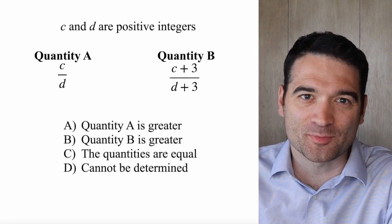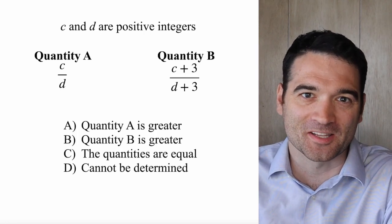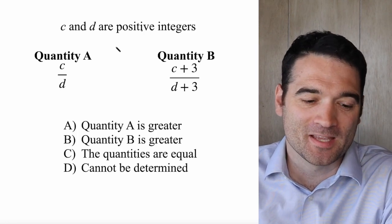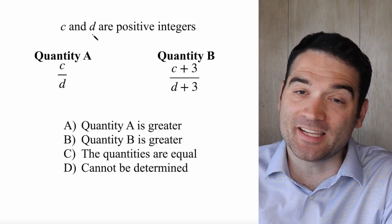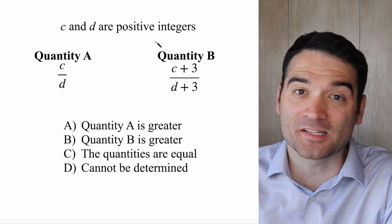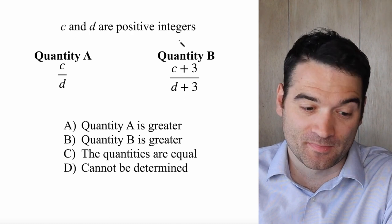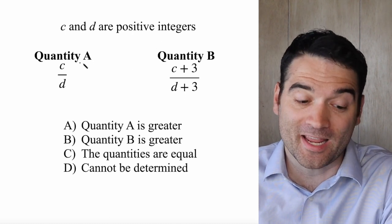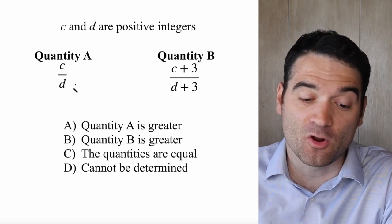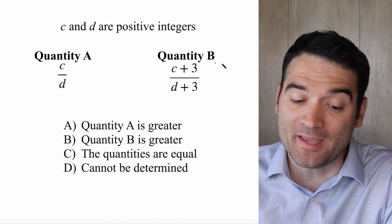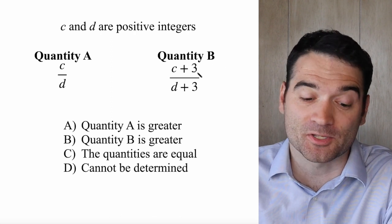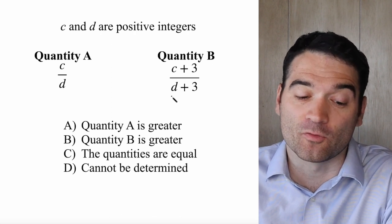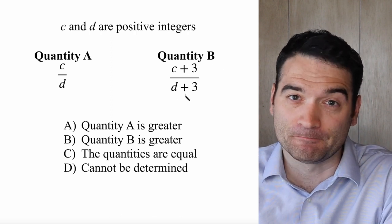Here's a GRE algebra question. Let's take a look. C and D are positive integers. We want to know what's greater: Quantity A, which is C over D, or Quantity B, which is C plus 3 over D plus 3.